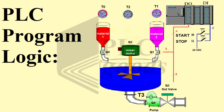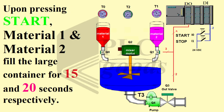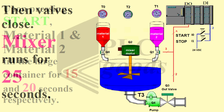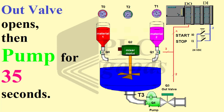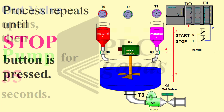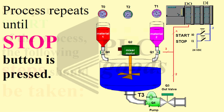PLC program logic: Upon pressing start, material 1 and material 2 fill the large container for 15 and 20 seconds, respectively. Then valves close. Mixer runs for 25 seconds. Out valve opens, then pump for 35 seconds. Process repeats until a stop button is pressed.